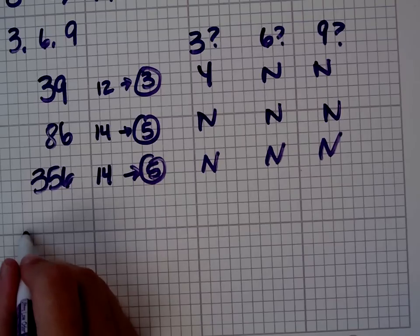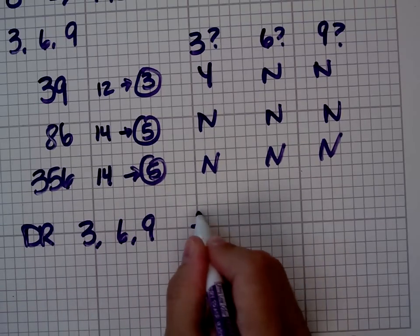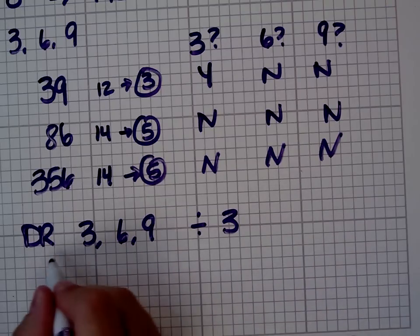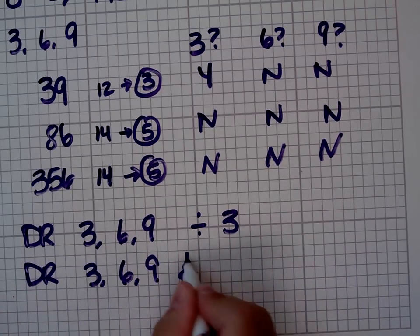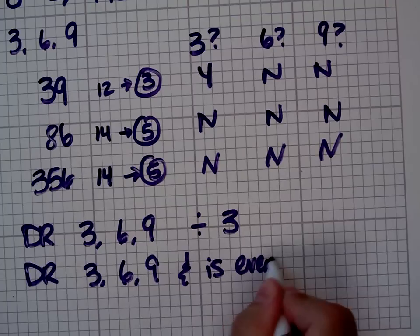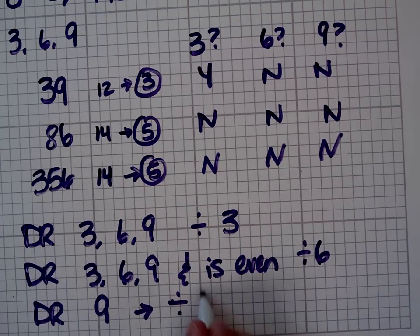Here's the rule. If it has a digital root of 3, 6, or 9, it is divisible by 3. If it has a digital root of 3, 6, or 9, and is an even number, it is divisible by 6. If it has a digital root of 9, it is divisible by 9.